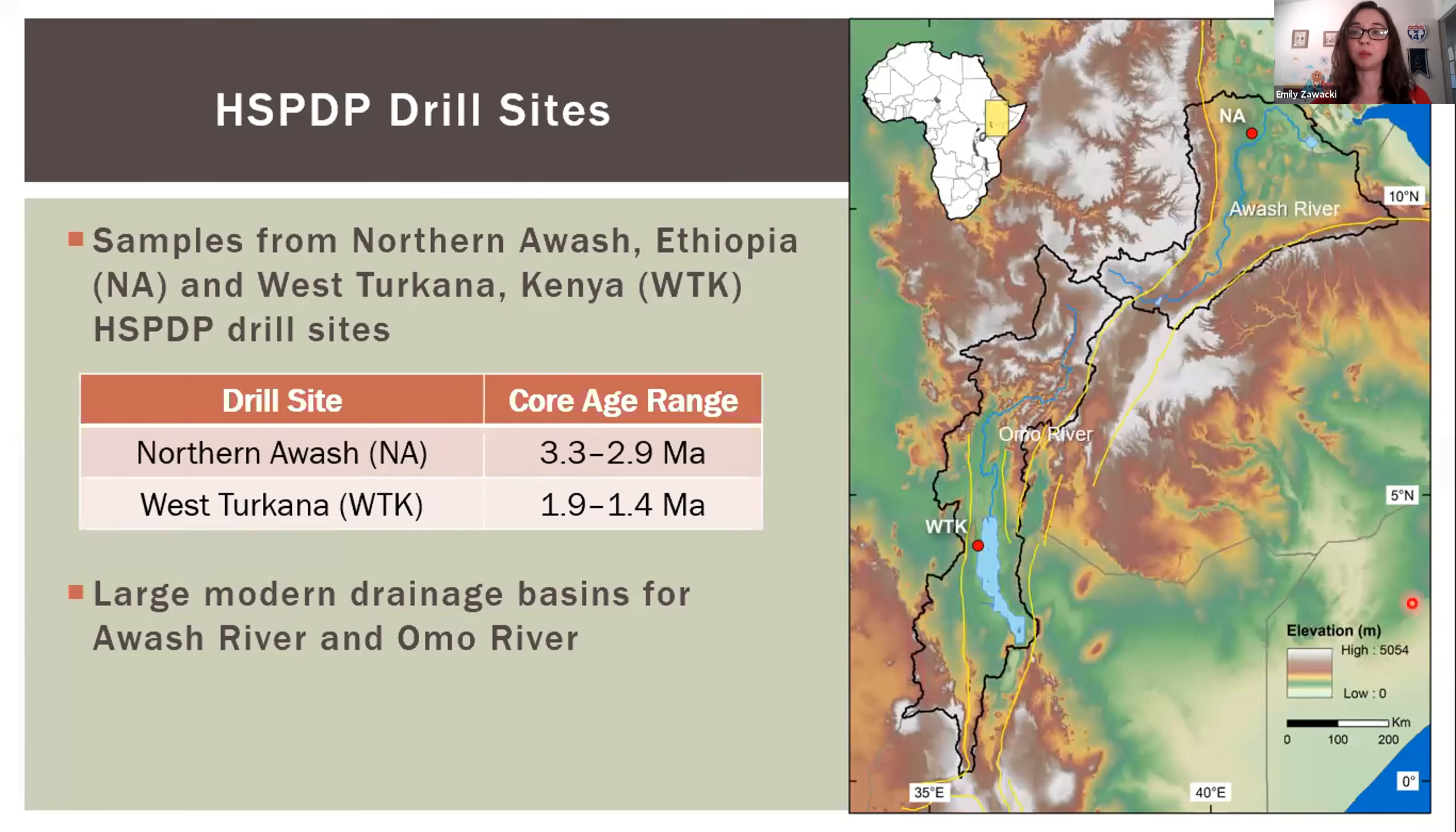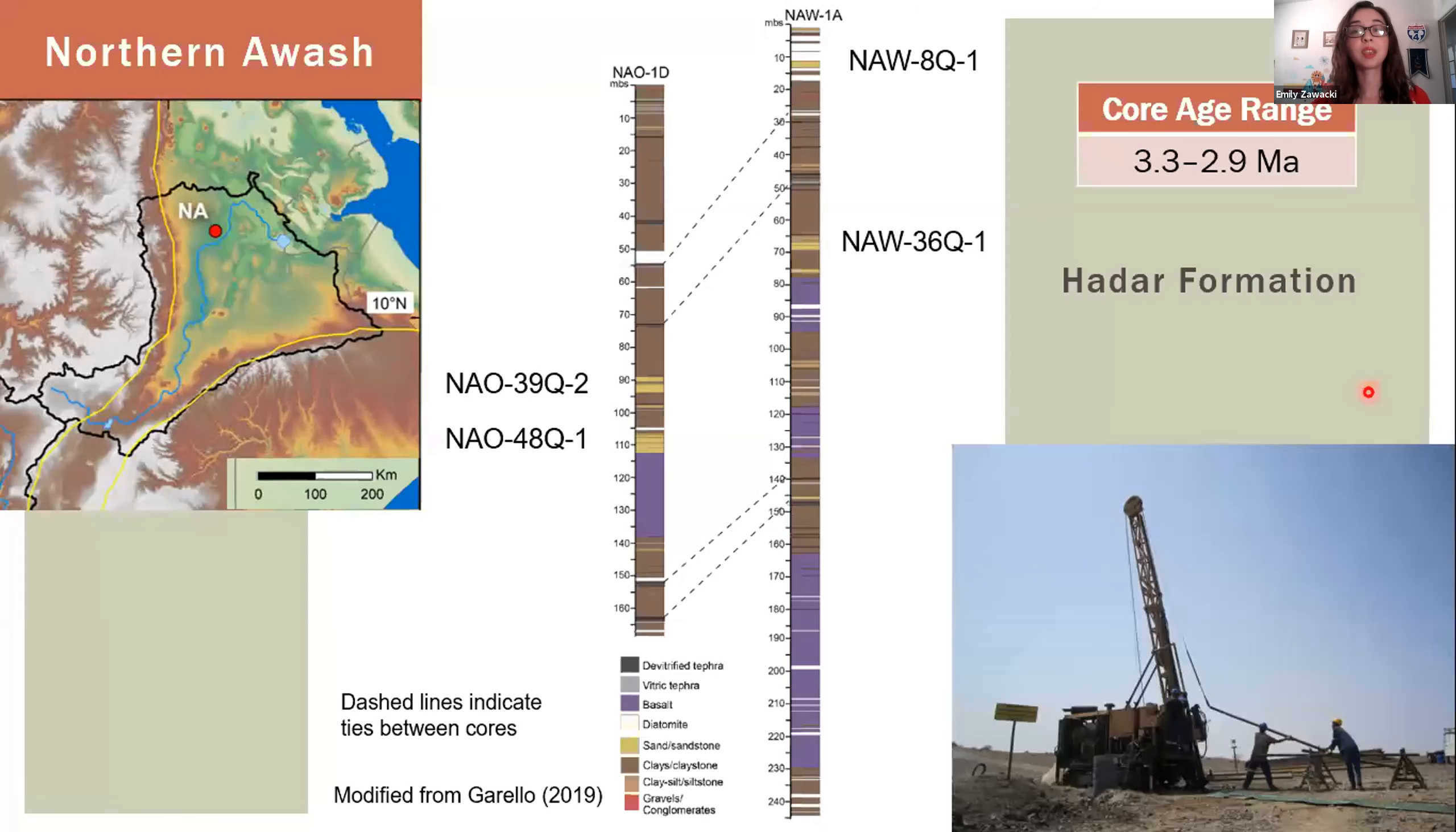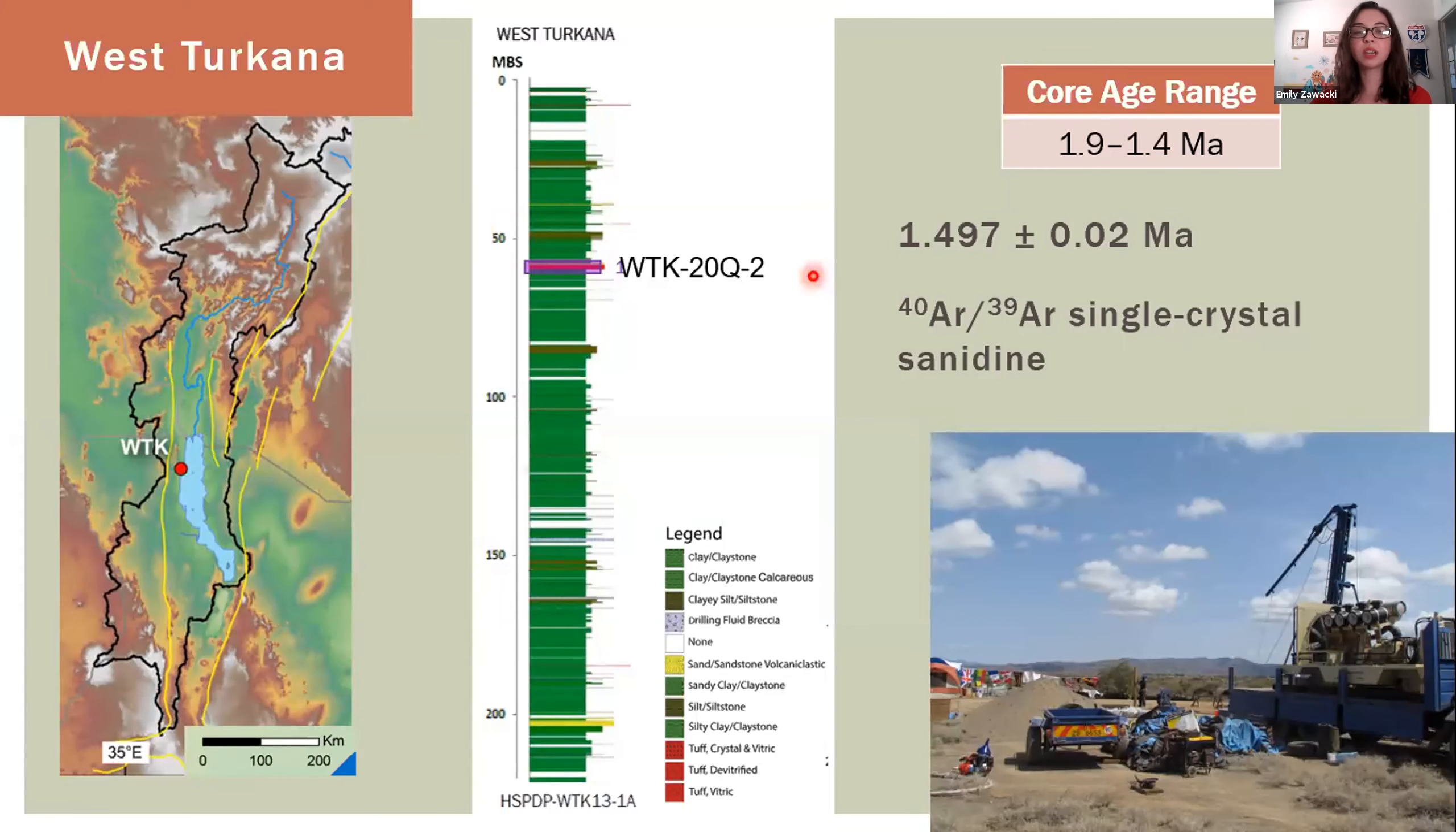I'll be talking about two of the HSPDP drill sites. The Northern Awash site in the Afar region of Ethiopia spans about 3.3 to 2.9 million years, and the West Turkana site in Northern Kenya spans about 1.9 to 1.4 million years. I collected four samples from the Northern Awash cores and one sample from West Turkana.